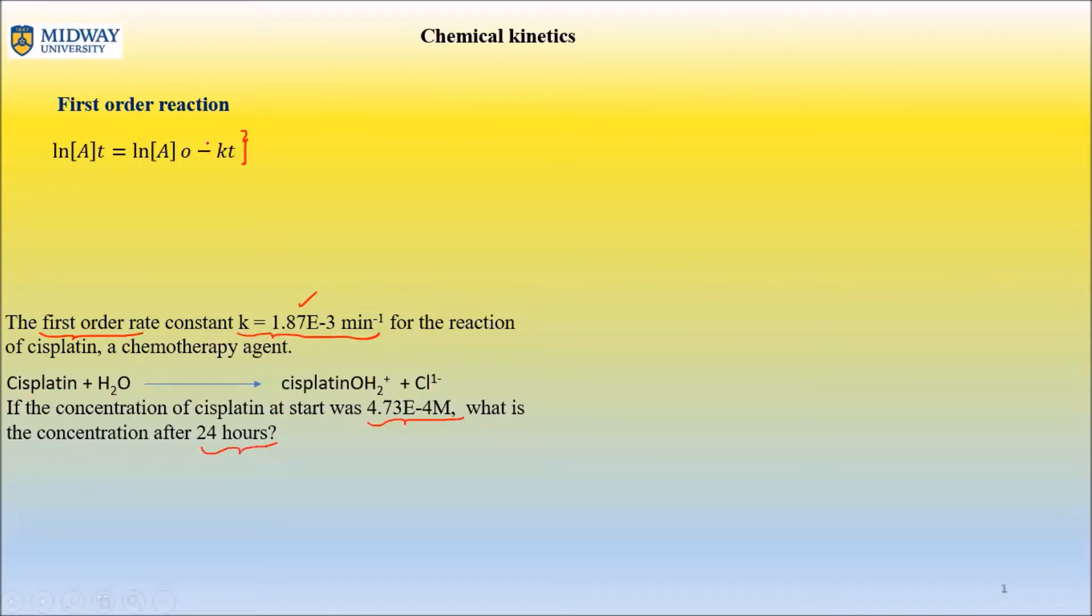So what do we know in this expression that's already present in this equation? Well, we certainly know K is 1.87 E to the negative three minute inverse. And zero stands for at start. So we certainly know A0 is 4.73 E to the negative four molar. What we need to find is AT, which is concentration at a particular time. We do know time is T, which is 24 hours.